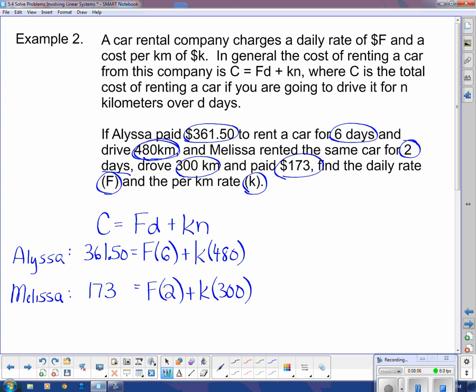And they don't look the same as what we've had, but we can rearrange them and make them look the same. That could be written as 6F and that could be written as plus 480K, and it's going to equal 361.50 for equation 1. For equation 2, we have 2F and we're adding 300K, and that's going to equal on the other side 173. So there's our equation 2.